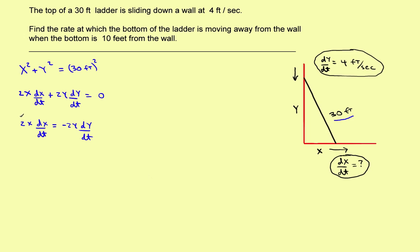I want to solve for dx/dt, so I'll divide both sides by 2x. The 2s cancel, giving dx/dt = −(y/x) · dy/dt. That's the derivative, solved for the quantity we're looking for.